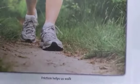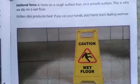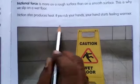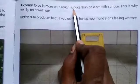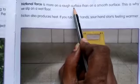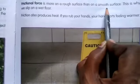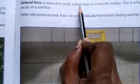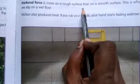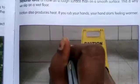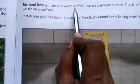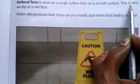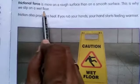We are looking at two surfaces: rough surface and smooth surface. On the rough surface — like the towel — observe how the car moves, and on the smooth surface observe how far it travels. Write your observations on the plain side of your classwork. Frictional force is more on a rough surface than on a smooth surface. This is why we slip on a wet floor.